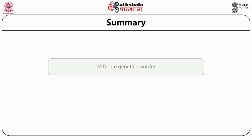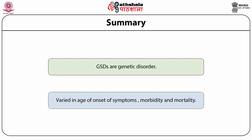Glycogen storage diseases affect primarily the liver, skeletal muscles, heart, nervous system and kidneys. These unique diseases are quite varied in age of onset of symptoms, morbidity and mortality. Glycogen storage diseases are classified according to their individual enzyme deficiency. Each of these enzymes regulates the synthesis or degradation of glycogen. Any defect in these enzymes ultimately results in disease — that is why glycogen storage diseases are considered genetic disorders.